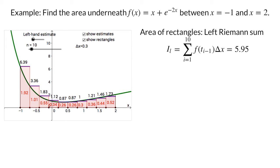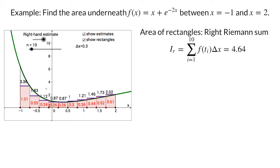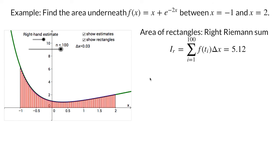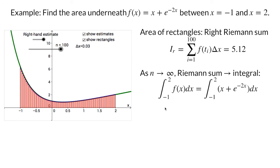For the right Riemann sum, the only thing that changes is that we use the height of the right side, f of t sub i, for the rectangle height. We can increase the number of rectangles to improve the estimate of the area. To get the actual area under the curve, we need to take the limit as the number of rectangles, n, goes to infinity. This limit is exactly the definition of the definite integral.